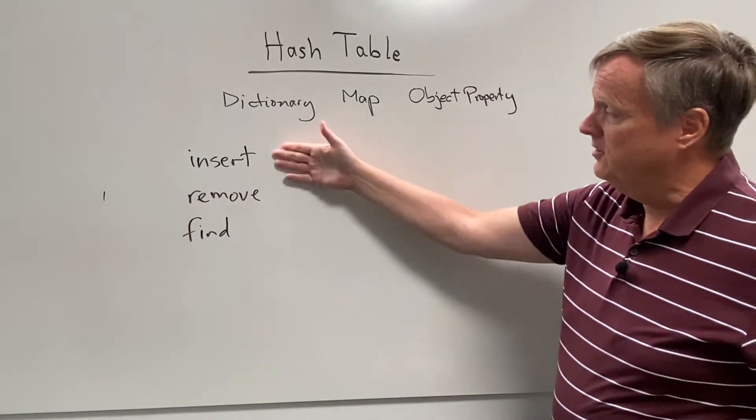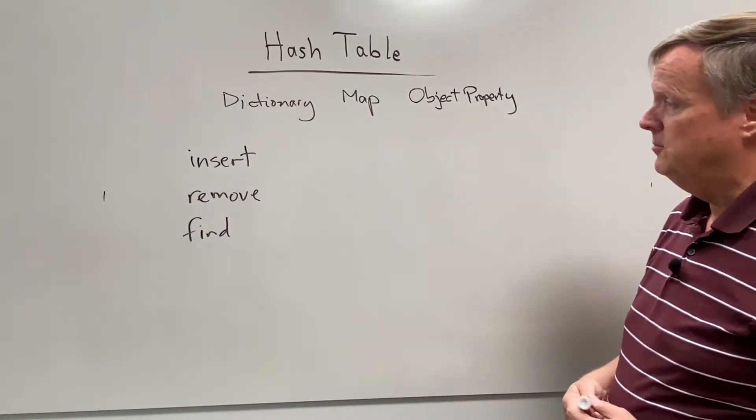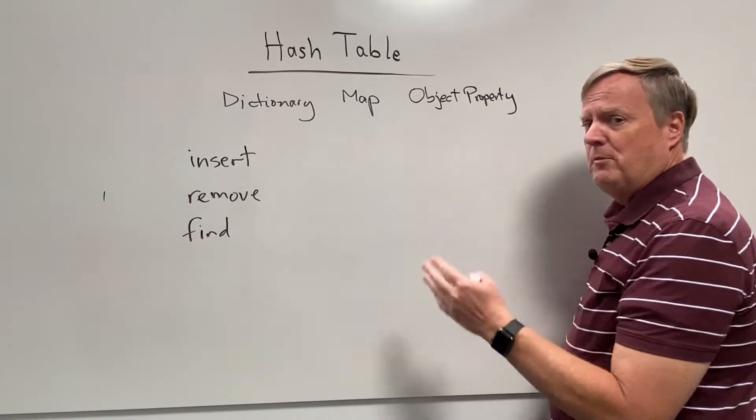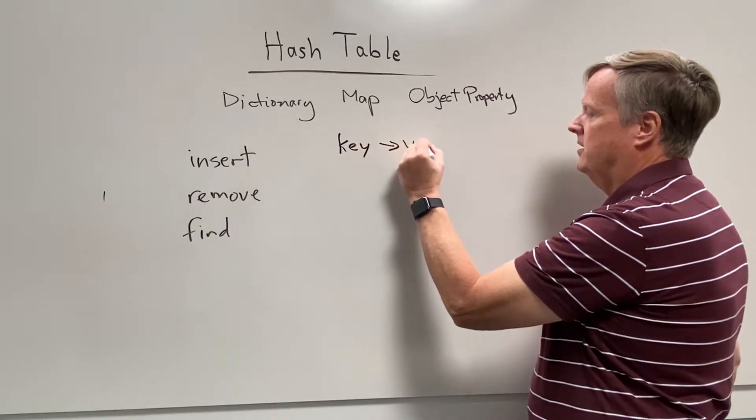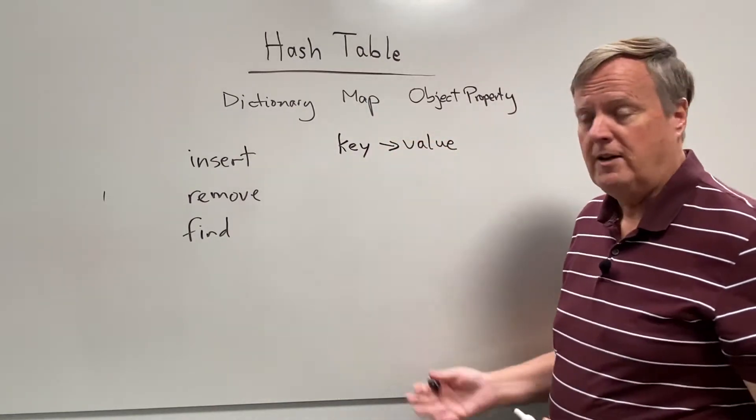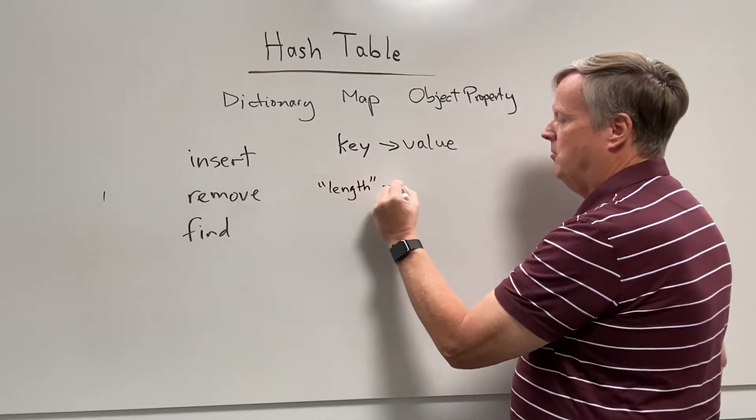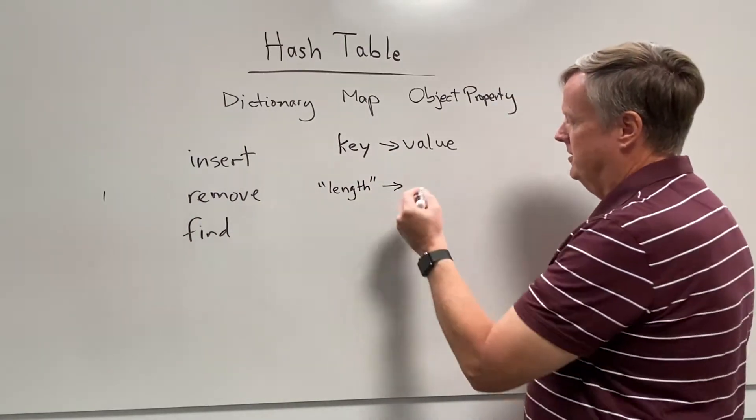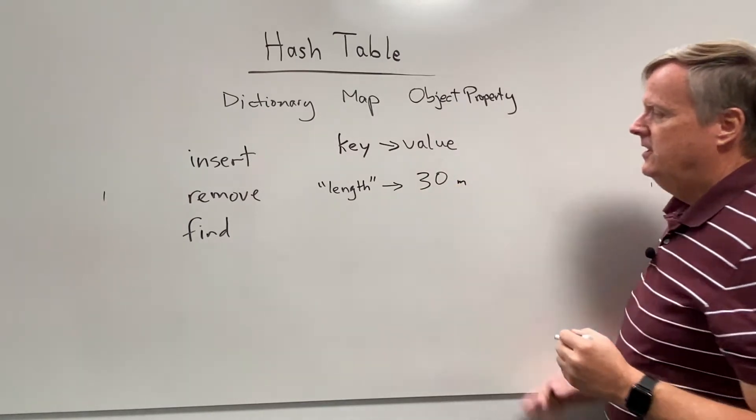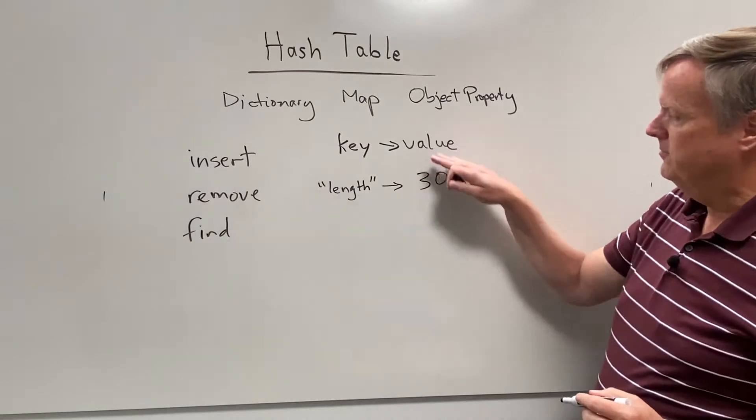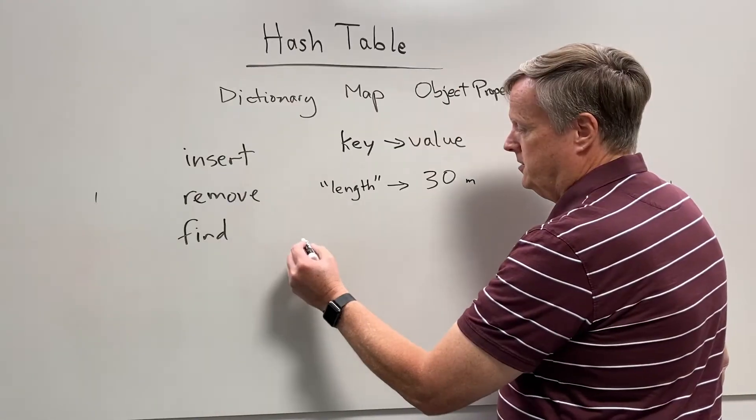In order to figure out how these work, the first thing we need to do is understand how a hash table works. The thing to remember most about a hash table is that it's a pair of key and value pairs. For example, I could have a key that is length, and I might want to associate with that key some value like 30, where I'm maybe thinking this is 30 meters. So I have a bunch of keys, and I have a bunch of values that go along with them, and I'm trying to keep track of these.